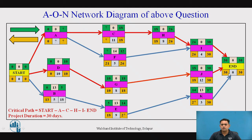Starting the backward pass: LFT of end node is 30, so LST is 30 minus 0 equals 30. LFT of I, J, and K is 30 each. LST of I is 30 minus 4 equals 26, LST of J is 30 minus 12 equals 18, and LST of K is 30 minus 3 equals 27. Float of I is 0, float of J is 0, and float of K is 13, indicating I and J are critical. LFT of H and F are both 26. LST of H is 26 minus 8 equals 18 (float 0, critical) and LST of F is 26 minus 5 equals 21 (float 14, non-critical).